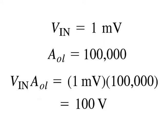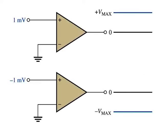For example, assume VIN is equal to 1 millivolt and AOL is equal to 100,000. Then VIN into AOL equals 1 millivolt into 100,000, which comes out to be 100 volts. Since the output level of an op-amp can never reach 100 volts, it is driven deep into saturation. The output is limited to its maximum output levels, as illustrated in the figure, for both a positive and a negative input voltage of 1 millivolt.